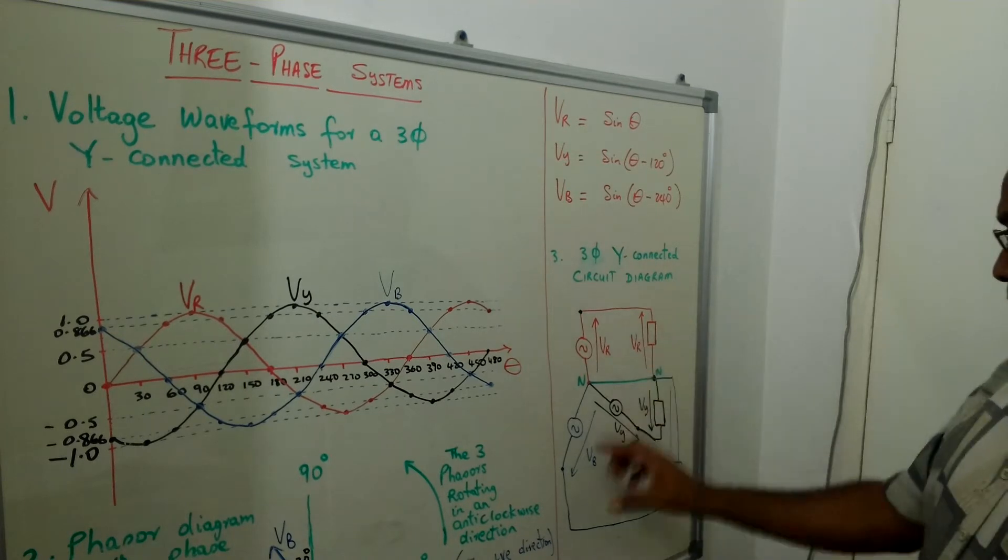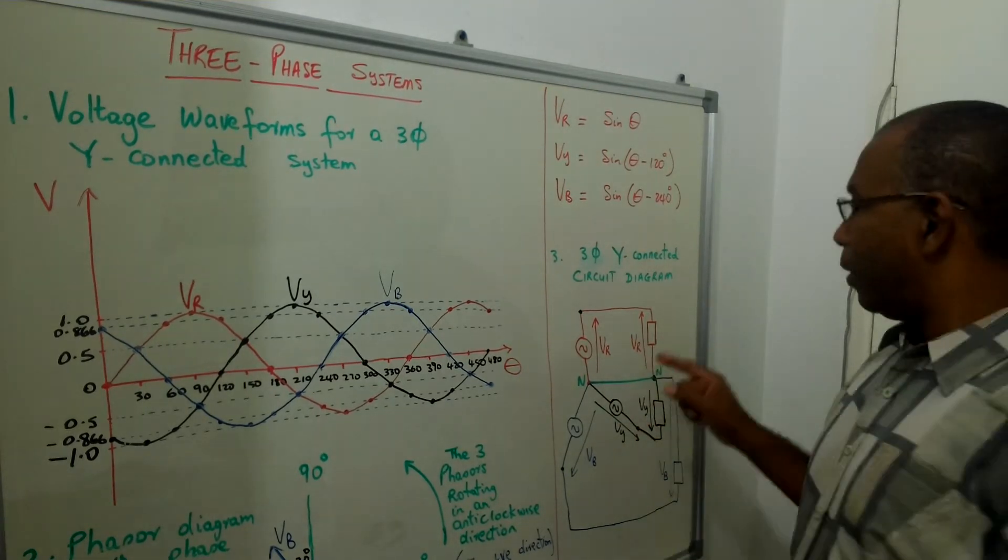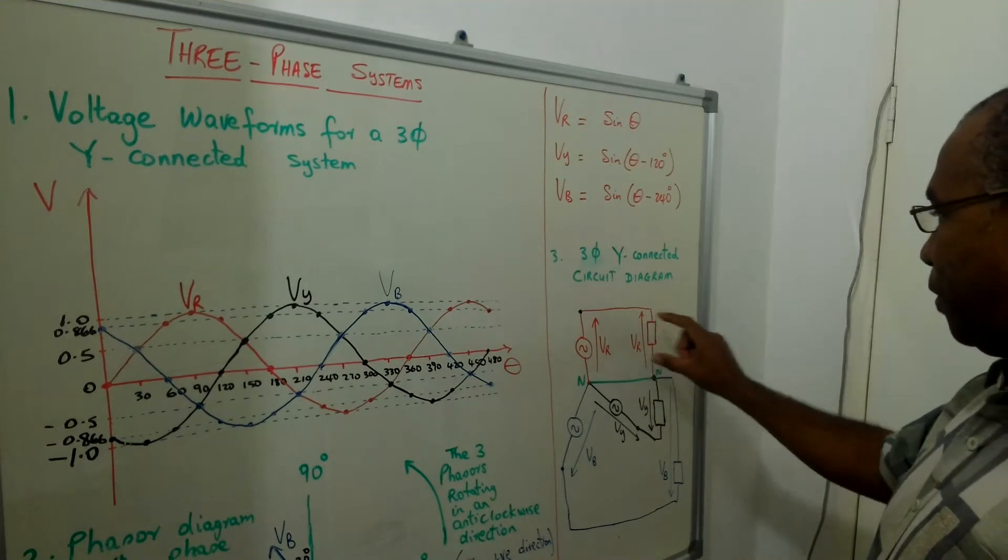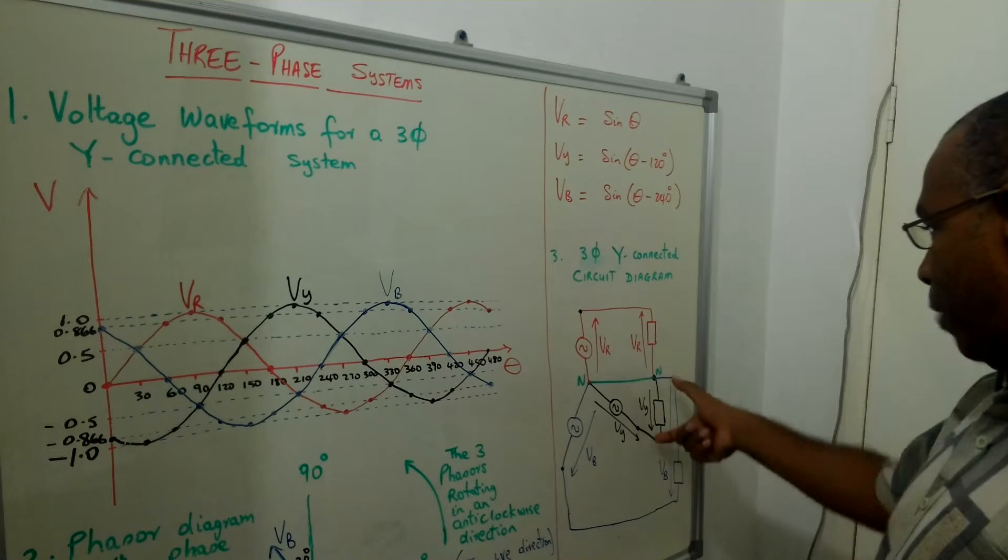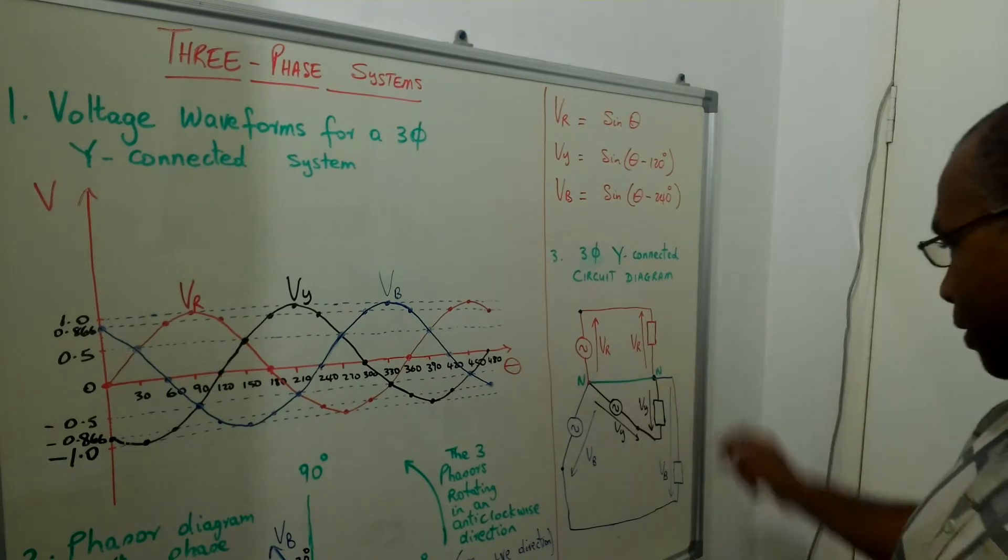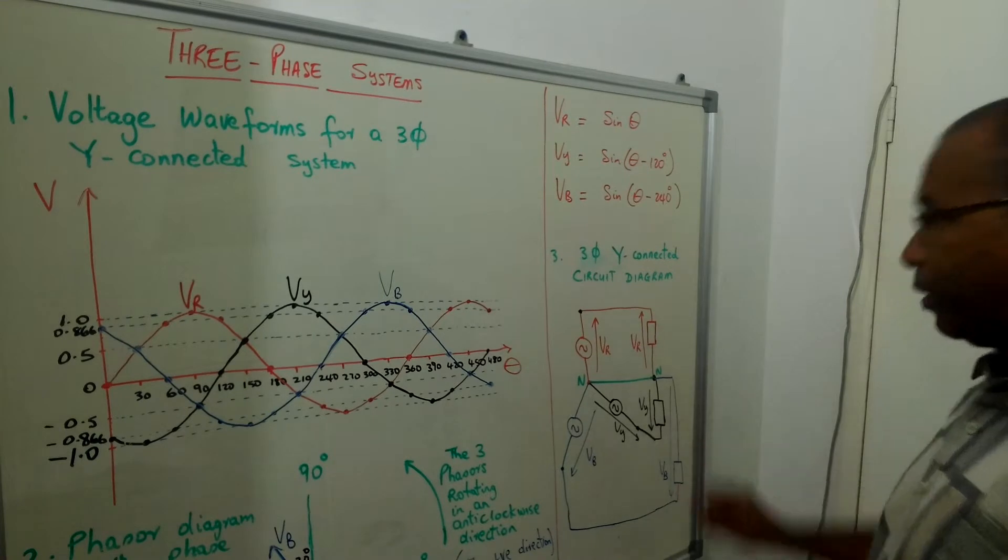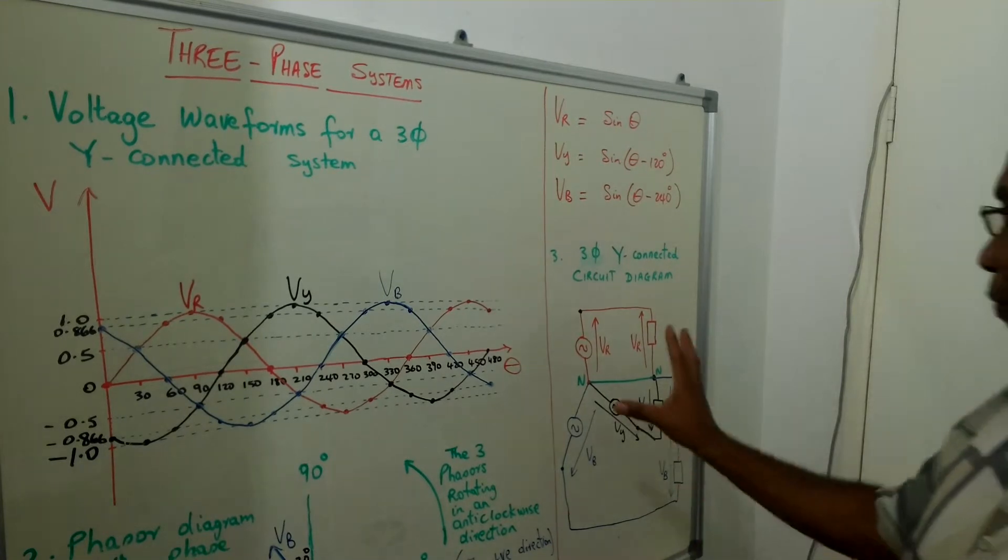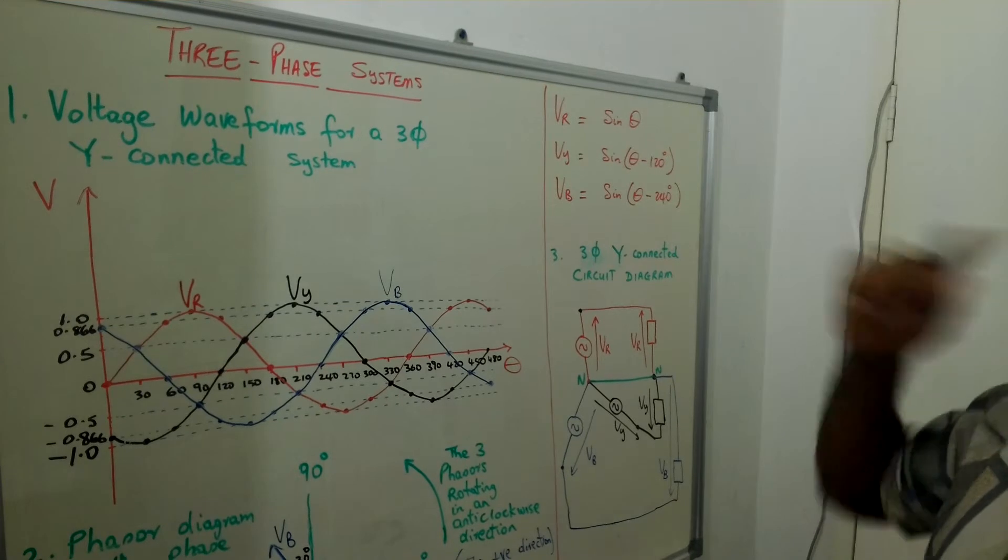And these are both star connected systems. So the voltages are labeled as VR, the voltage across the red phase, VY, the voltage across the yellow phase, and VB, the voltage across the blue phase. Now these voltage waveforms can be represented by these equations.